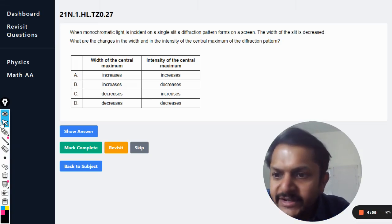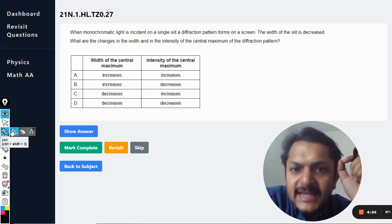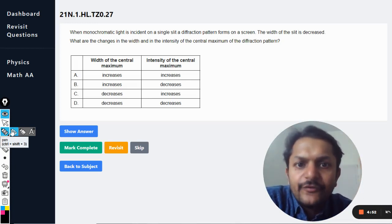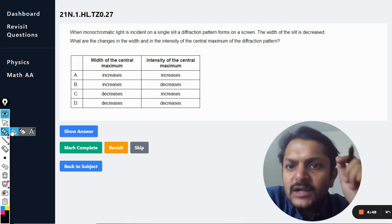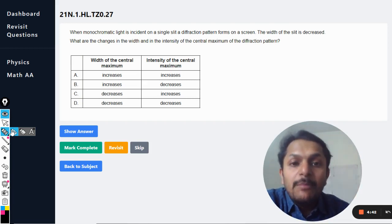Okay dear students, let us see what is there in this question. When monochromatic light is incident on a single slit, a diffraction pattern forms on a screen. That is obvious. The width of the slit is decreased. What are the changes in the width and in the intensity of the central maxima of the diffraction pattern?